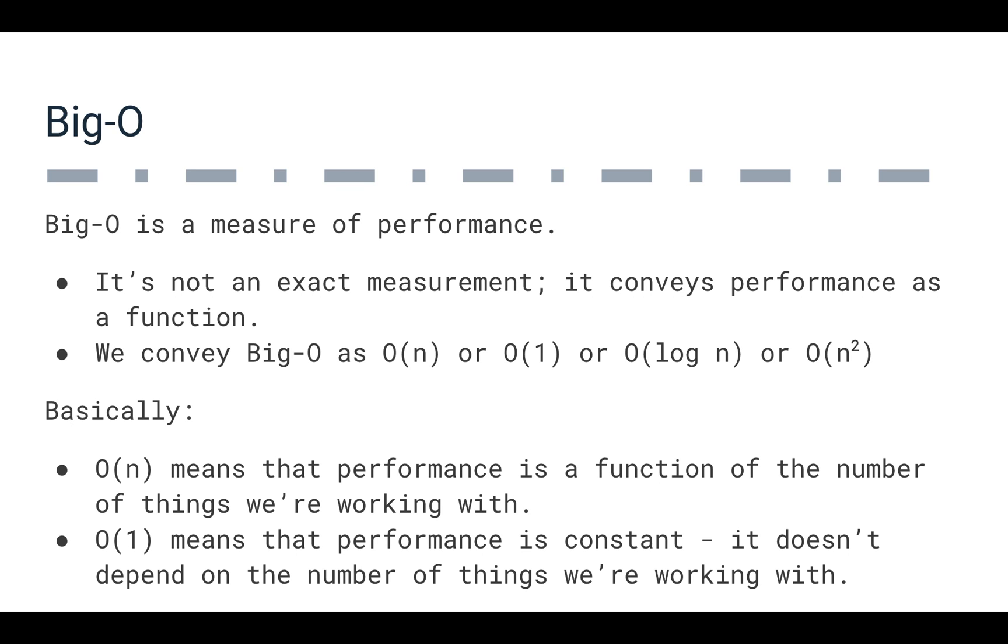So one of the ways we measure this is with Big O. Big O is really a measure of performance. It's not exact. It's not meant to tell you exactly how much time something's going to run in, and that really wouldn't be useful anyway, because there's so many different processor configurations, so many different system configurations, that exact measurements probably wouldn't mean much day-to-day. Really, it conveys your performance as a basic and simple reduced function. So we usually convey Big O as Big O of n, or Big O of constant time, or Big O of 1.